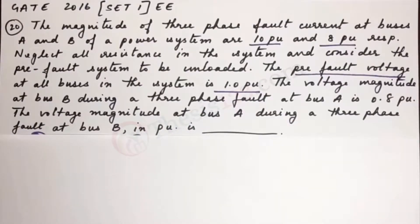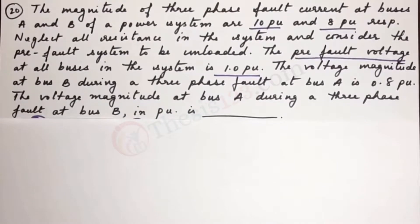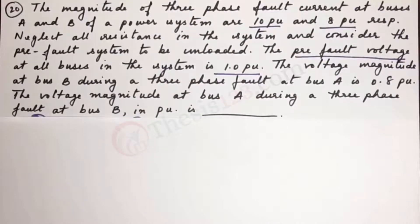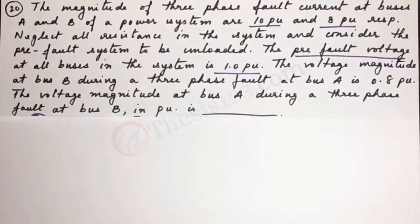Here's the next question. Number 20. The magnitude of three-phase fault current at buses A and B of a power system are 10 PU and 8 PU respectively.